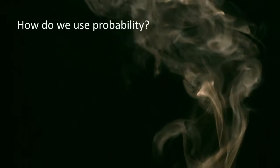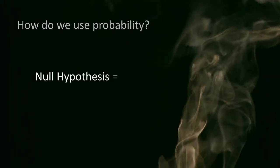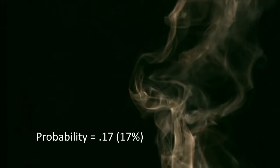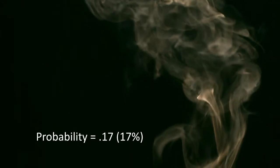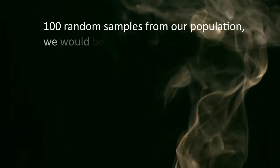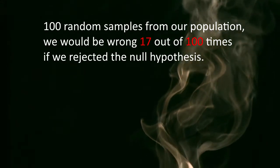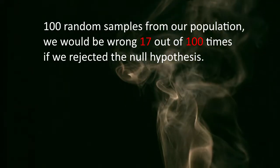So how exactly do we use this probability to come to a conclusion about the null hypothesis? Remember, if the null hypothesis is true, there is no association. There is a probability of 0.17, or 17%, of observing this size of difference between smokers with and without depression. The translation of this 17% probability is that if we took 100 random samples from our population, we would be wrong 17 out of 100 times if we rejected the null hypothesis and said that there was a difference in smoking quantity for smokers with and without depression. Now we have to decide whether or not this is something that we feel comfortable about — do we mind making a mistake 17 out of 100 times?